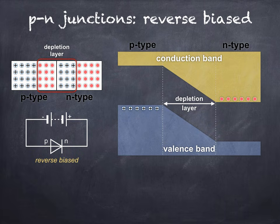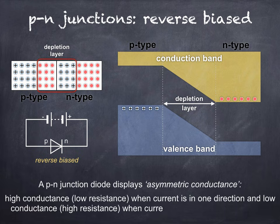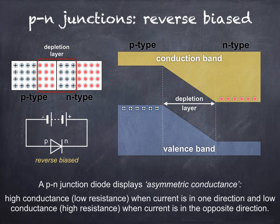There's almost no conduction, apart from a very small current known as the reverse leakage current, due to the motion of minority charge carriers. The P-N junction diode displays asymmetric conductance — this isn't a term you have to learn. What it means is that the P-N junction diode has a high conductance when the current is in one direction, when forward biased, and an extremely low conductance when current is in the opposite direction, when reverse biased.